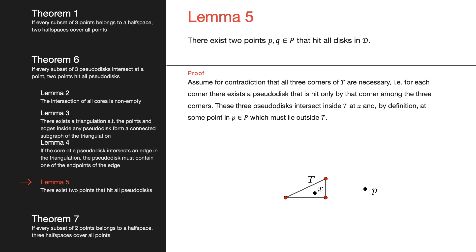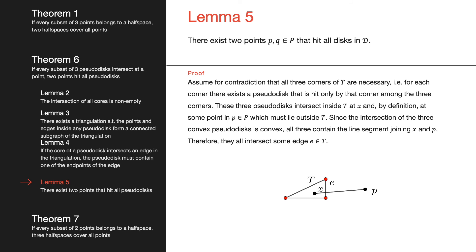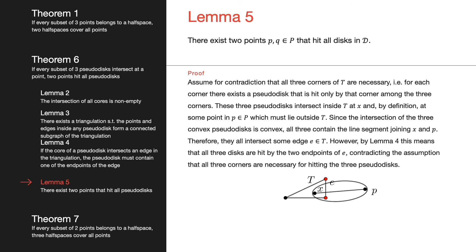We now show that one of the points is redundant. Assume all three corners are necessary. Then for each corner, there is at least one pseudodisk hit only by that corner. Take three pseudodisks each hit by a different corner. These three pseudodisks must intersect at some point in our point set, which must lie outside the triangle. Since the pseudodisks are convex and their intersection is convex, the line segment joining this point to x lies in every pseudodisk. This segment must intersect some edge of the triangle, so by Lemma 4, the two endpoints of that edge hit all three pseudodisks — a contradiction. This concludes the proof for Theorem 6.